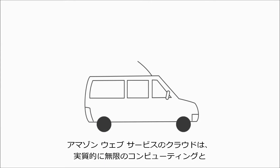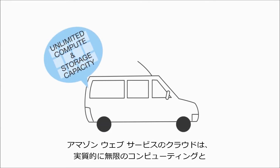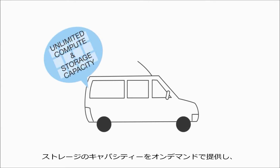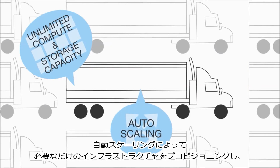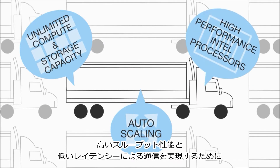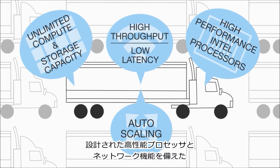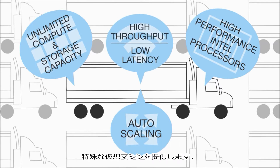The Amazon Web Services cloud provides virtually unlimited compute and storage capacity on-demand, auto-scaling to provision just enough infrastructure as you need it, specialized virtual machines with high-performance processors, and network features designed for high-throughput, low-latency communications.